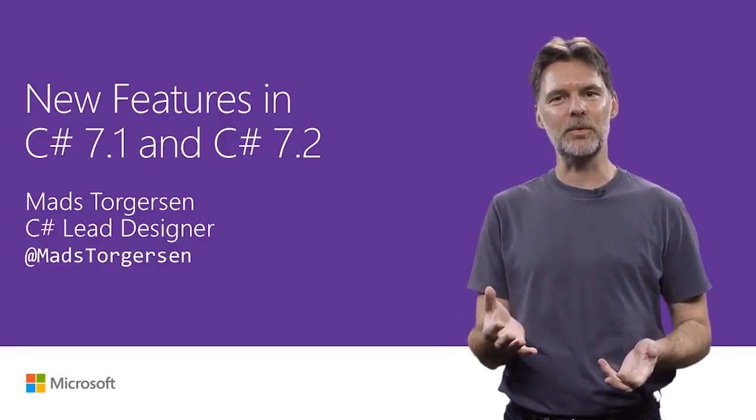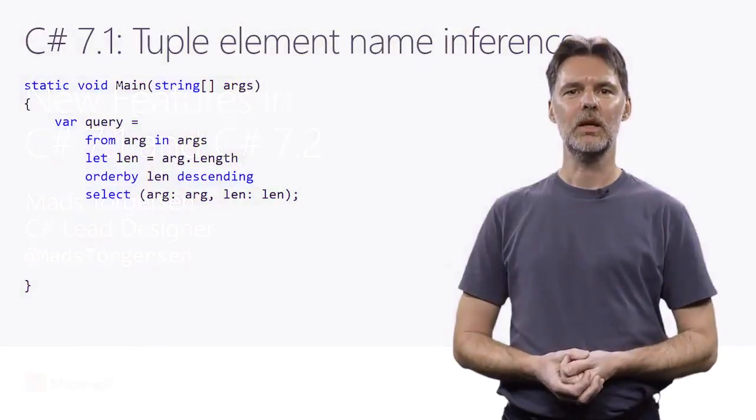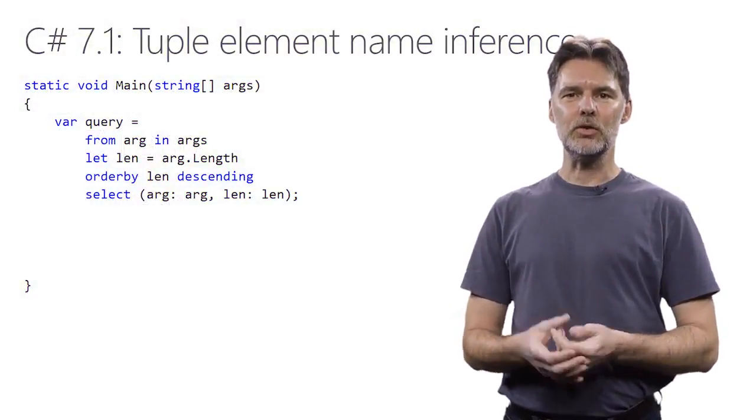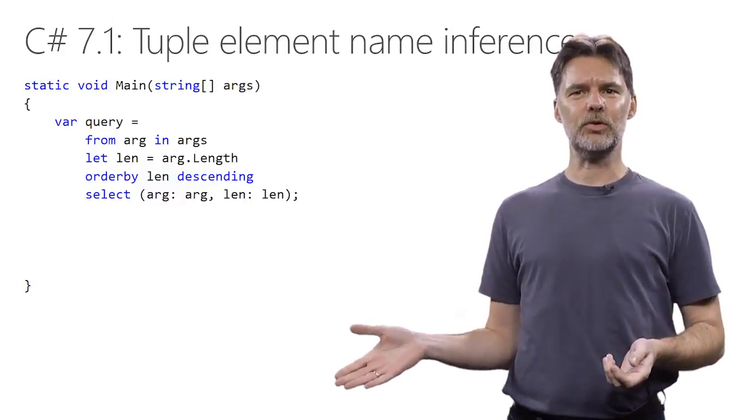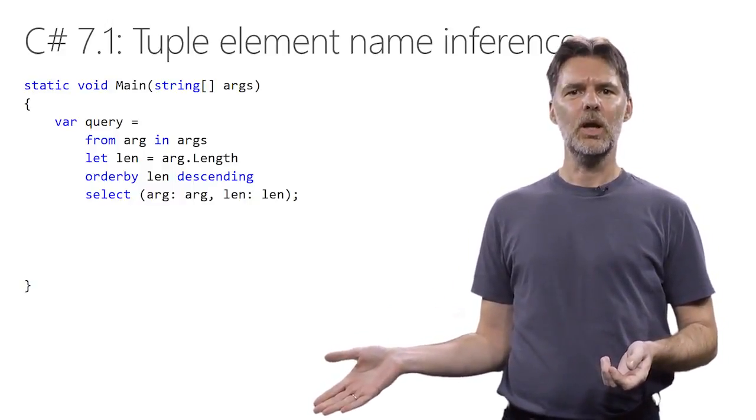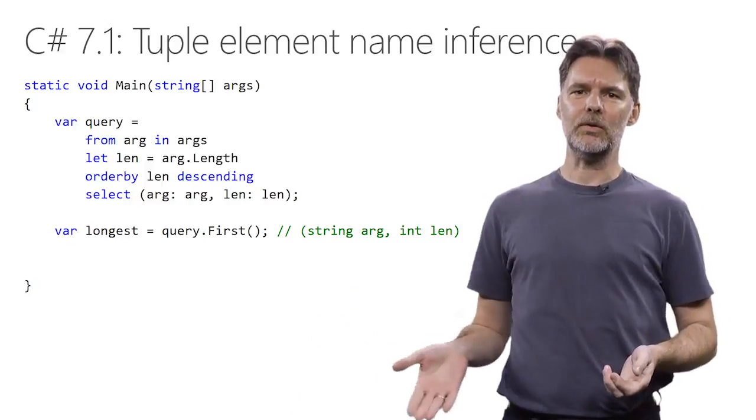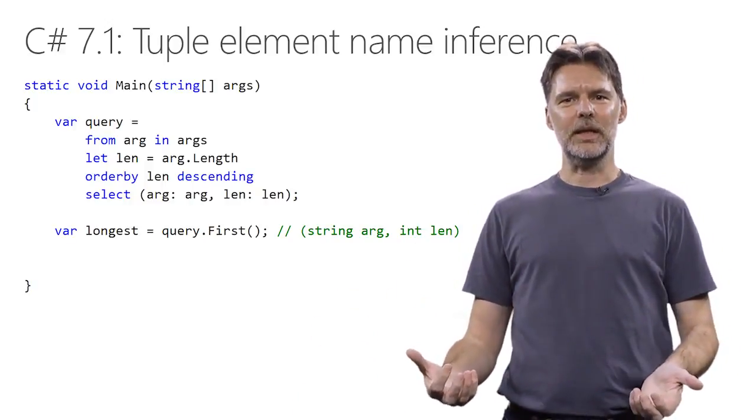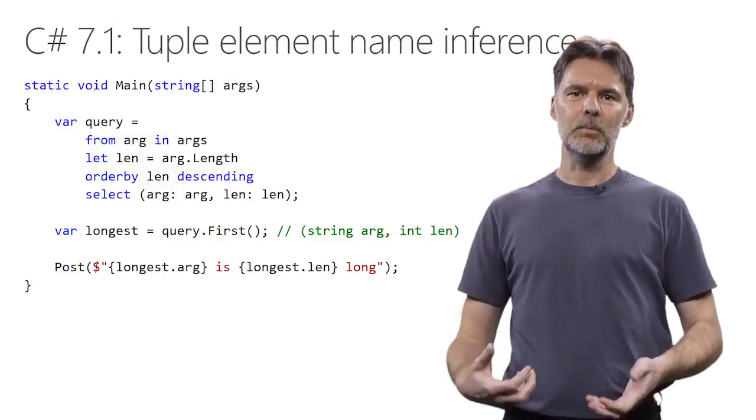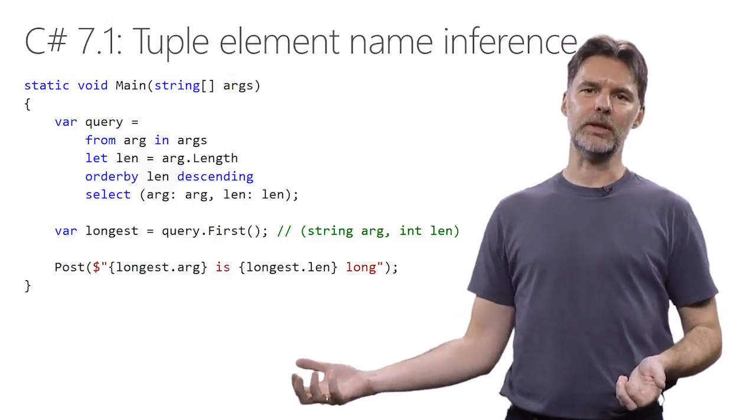Let's start by looking at some of the 7.1 features. In C# 7.0, we added tuples, which can optionally have names for their elements. Here's a query that produces such named tuples. When we take the first element out of the query, it therefore is a tuple that has those element names, and we can access them by the names like we do inside of this interpolated string.